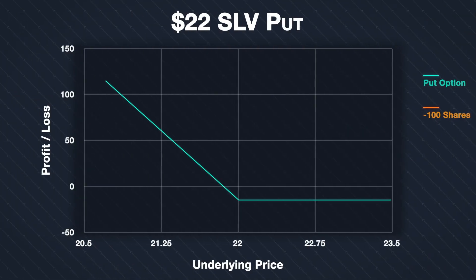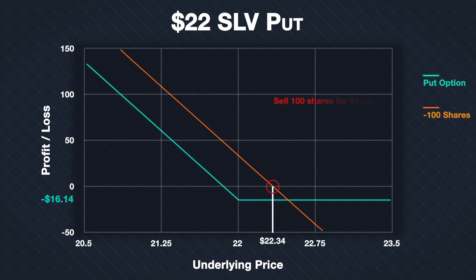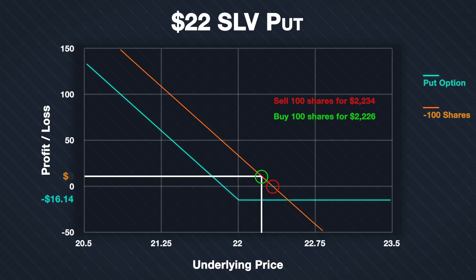We began with a bearish bias and bought the put option, which resulted in a loss. But how does this loss compare to a position in the underlying — in other words, what if we had just shorted 100 shares of SLV instead? The price of SLV was $22.34 when we purchased the put, so we could have sold 100 shares for $2,234. At the end of Friday the price had decreased slightly to $22.26, meaning we could buy back the 100 shares for $2,226. This means selling the shares instead would have resulted in a small gain of $8 minus a little for fees. Selling the shares would have required a lot more capital than purchasing the put option, but in this instance, selling the shares would have resulted in a better profit outcome.